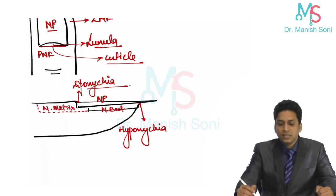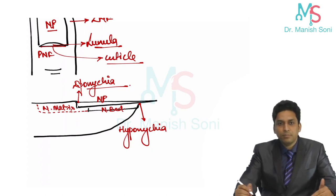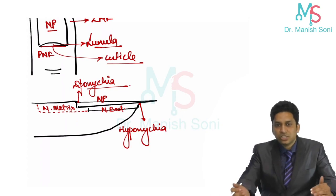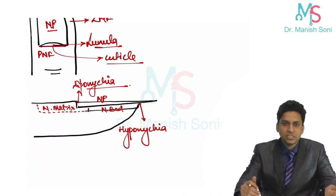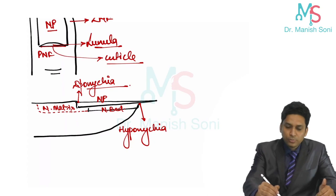So if you cut the nail and see the sagittal section, you will find the nail plate, below which is the nail bed, behind them is the nail matrix. The distal junction is hyponychium, the proximal junction is eponychium — eponychium corresponds to the cuticle.